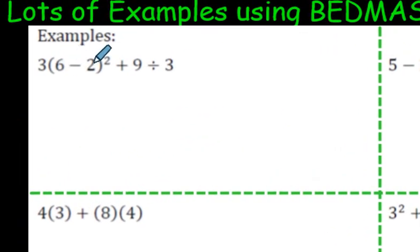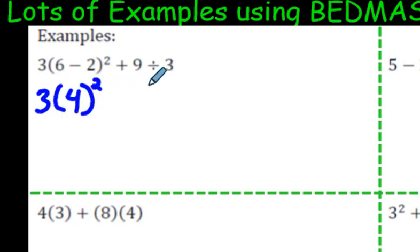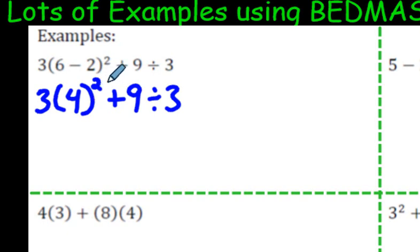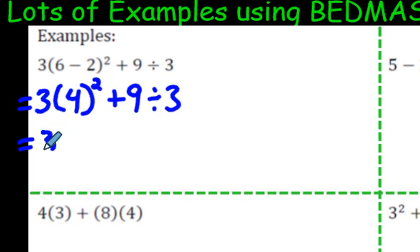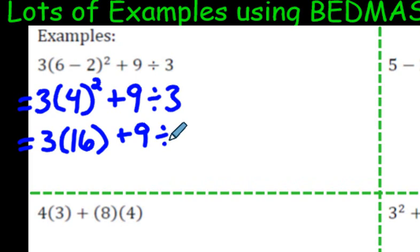So first of all, brackets. I see 6 minus 2 here, and 6 minus 2 is 4. After brackets, we've dealt with them. Next is exponents. So 4 to the power of 2, that means 4 times 4, which is 16. So we now have 3 times 16 plus 9 divided by 3.